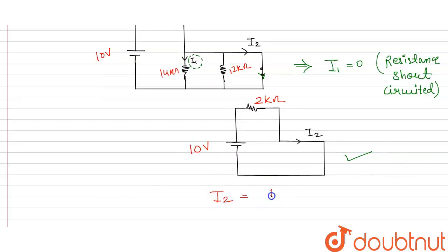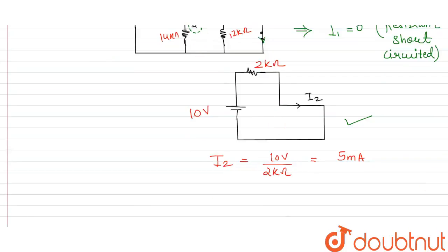So our i2 will be 10 volt divided by 2 kilo ohm. From here it equals 5 milli ampere. So the value of i1 is 0 ampere and the value of i2 is 5 milli ampere.